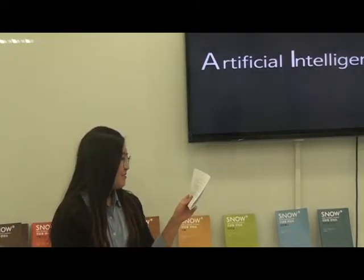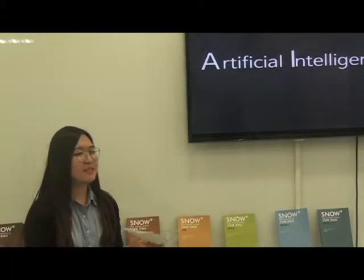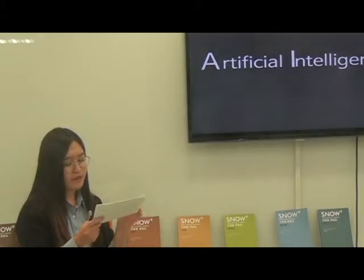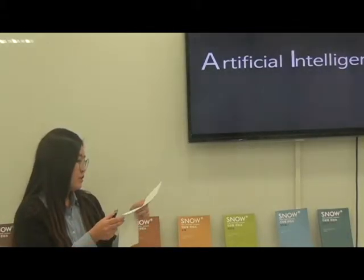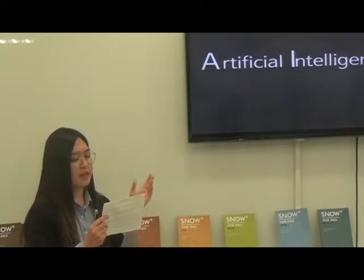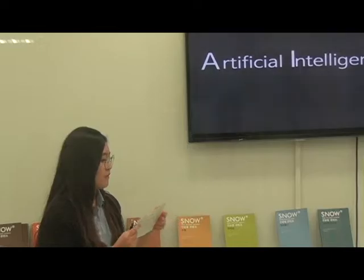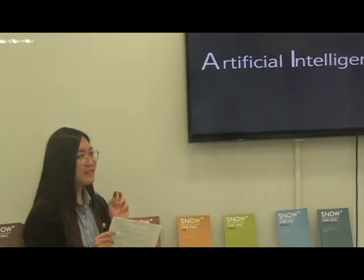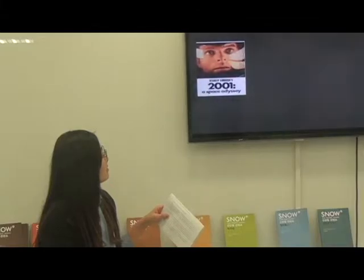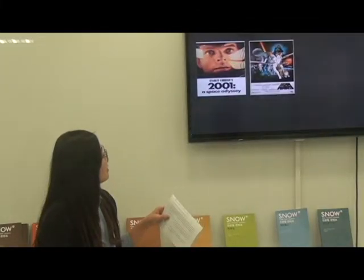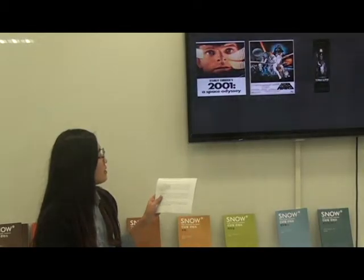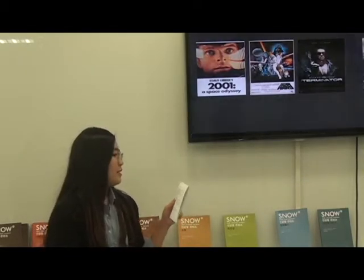So, what is AI? AI is the abbreviation of artificial intelligence, which means the intelligence exhibited by machines or software. It is also the name of the academic field of study which studies how to create computers or software that are capable of intelligent behavior. We can see this kind of creature in very old movies like Swallow.